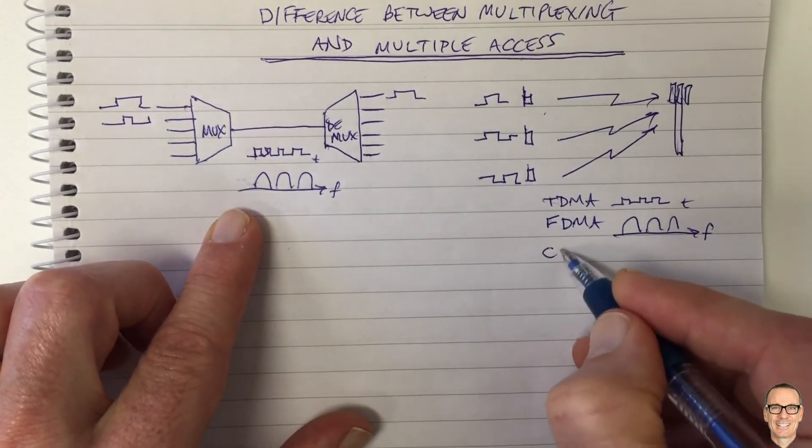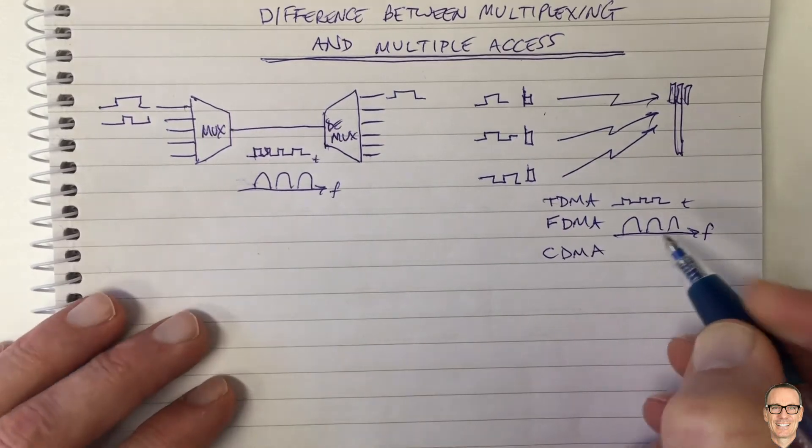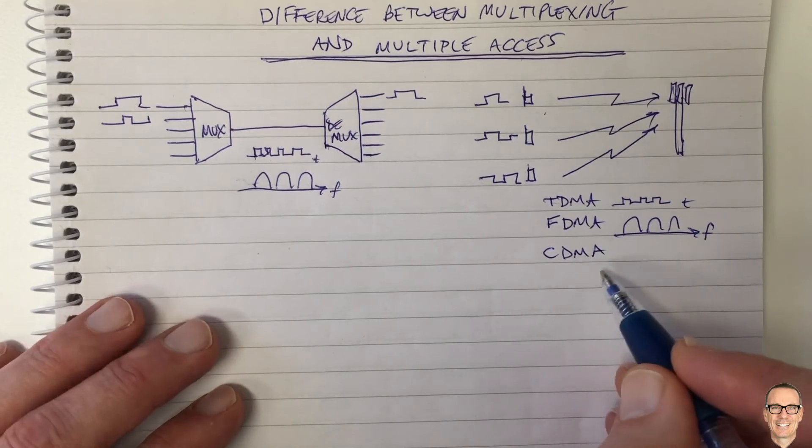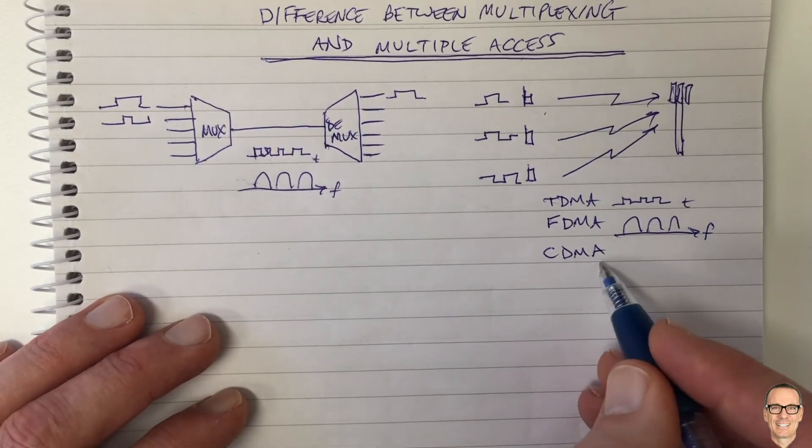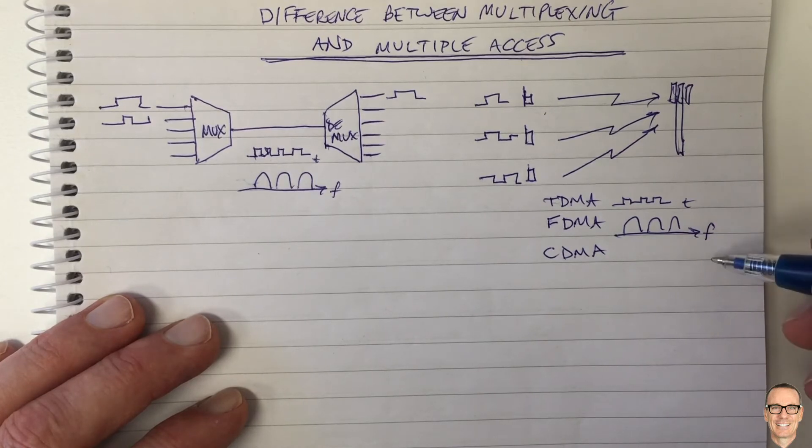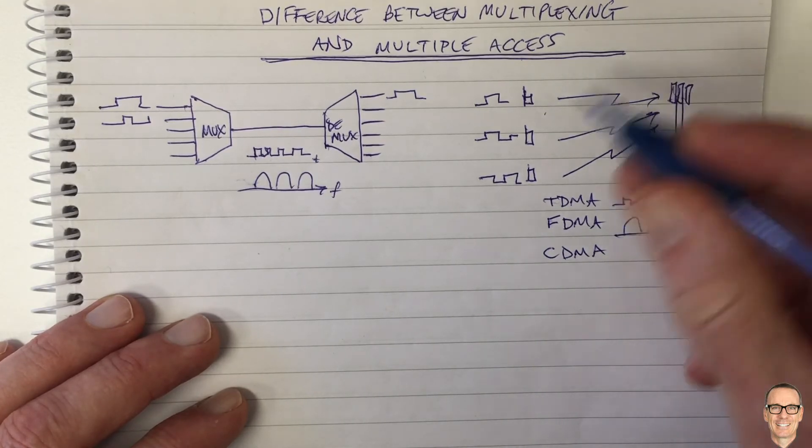We can also have code division multiple access, where each user sends all of the time, all across all of the frequencies, but differentiates themselves by a code. And of course, these ones are all going to require some level of coordination in the network.